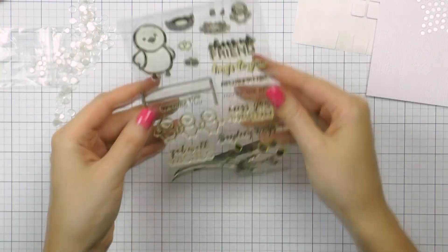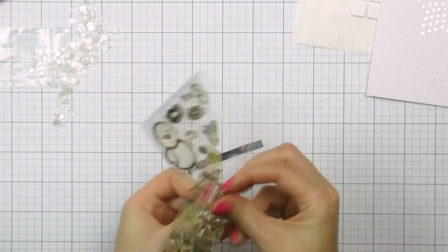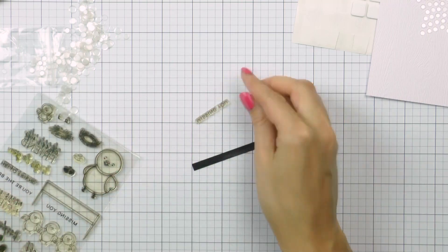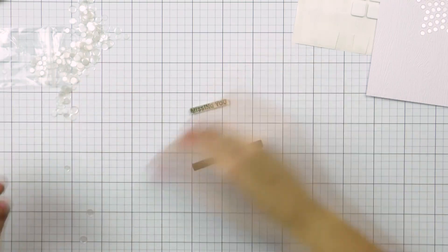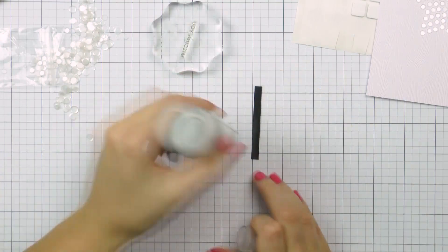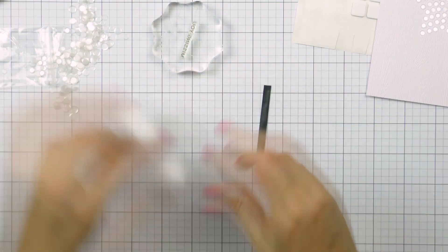My card also needs a sentiment and I decided to use one from the Birdie Friends stamp set. Since this is such a minimalistic card or clean and simple card I needed to use a skinny sentiment. So I used one that reads missing you.